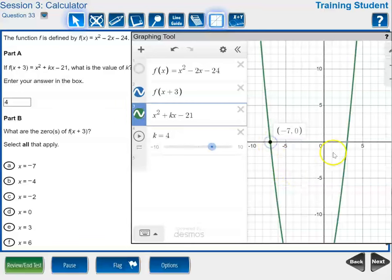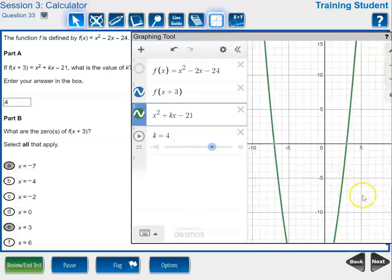Now select the zeros of f of x plus 3. Well that's this graph. The zeros would be the x-intercepts. So they can click on the graph to see both of them. x would have to be negative 7 and positive 3. Of course you do have to teach your kids that the x coordinate of the points on the x-axis where the parabola crosses is the zero of the function.